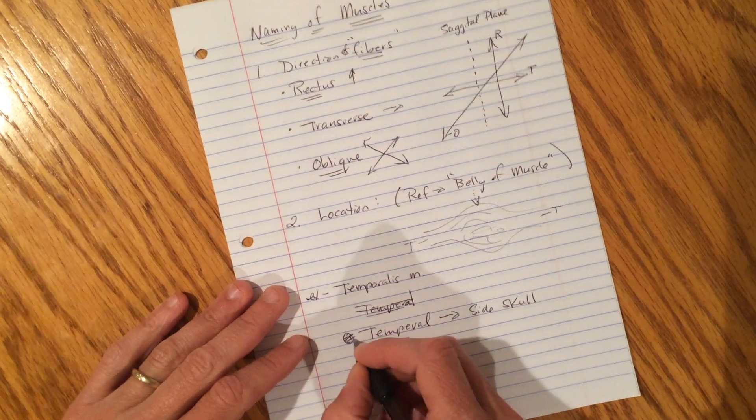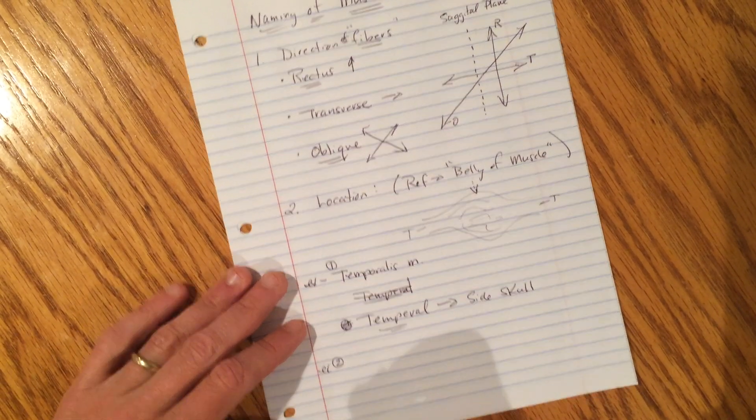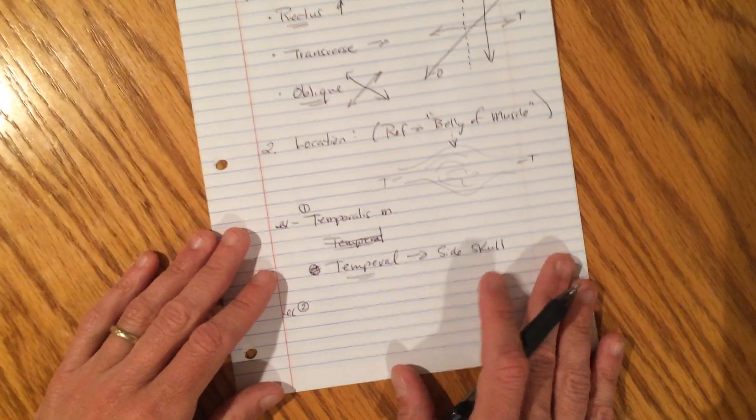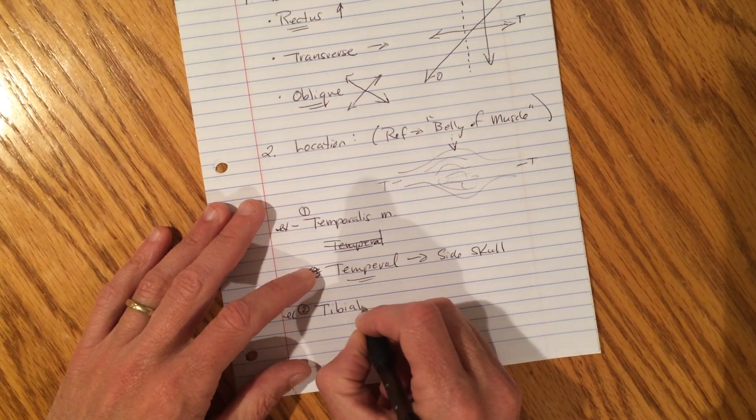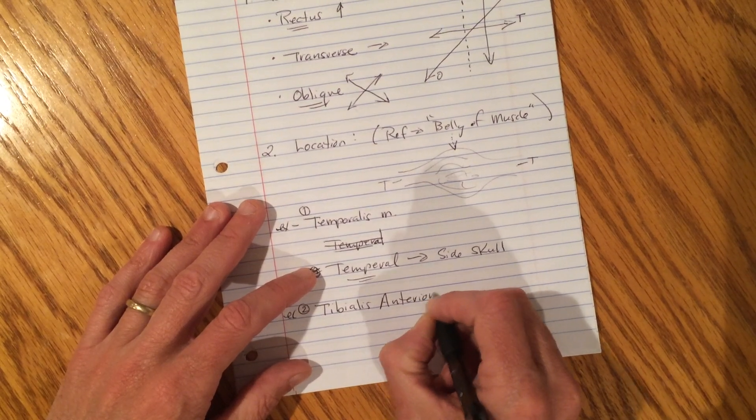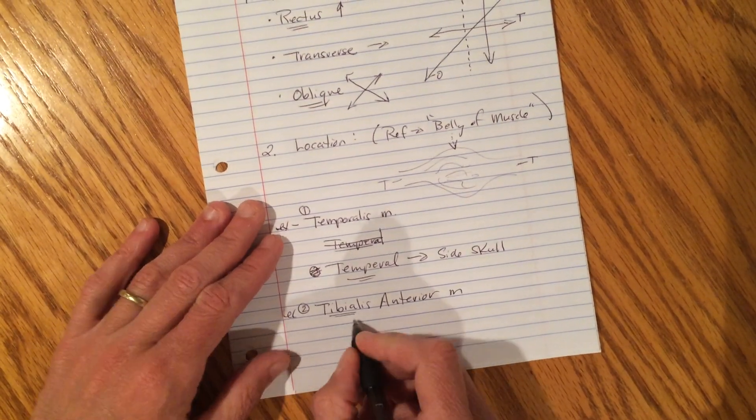So that's example one. Let's do example two. Sorry about the messy notes. Yours will just be nicer when you do them, right? Can you see that? Yep, perfect. All right, the second one. This is the name of a real muscle. Named for its location. The muscle's name is tibialis anterior.